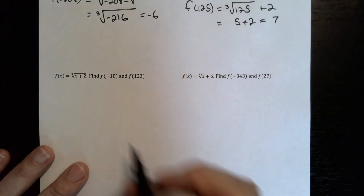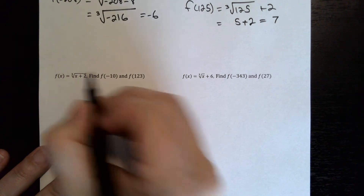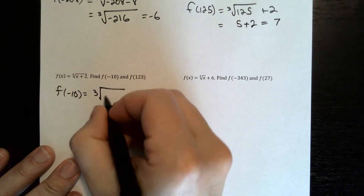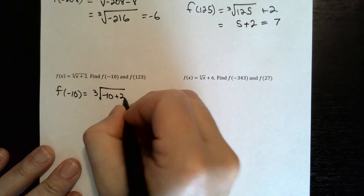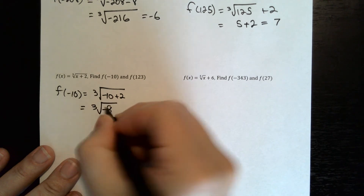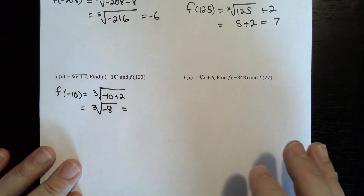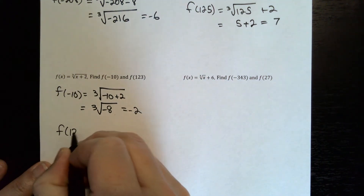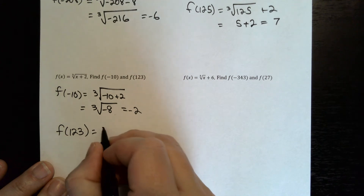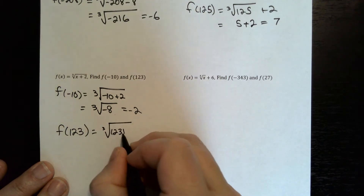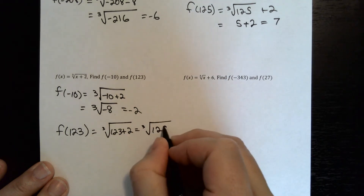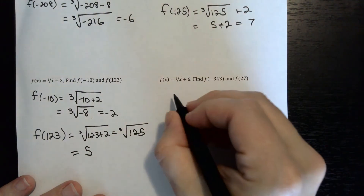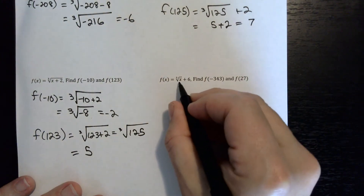For f of x equals the cube root of x plus 2, where the 2 is inside under the cube root: f of negative 10 equals the cube root of negative 10 plus 2, which is the cube root of negative 8. Since the cube root of positive 8 is 2, the cube root of negative 8 is negative 2. And f of 123 equals the cube root of 123 plus 2, which is the cube root of 125, which equals 5.